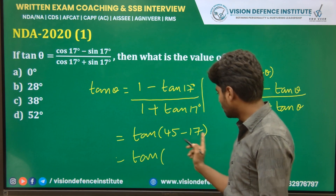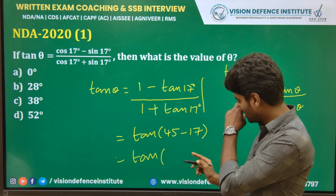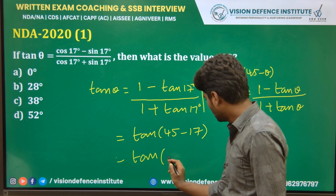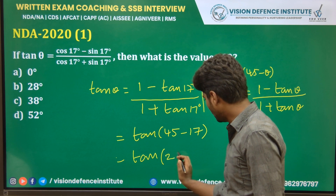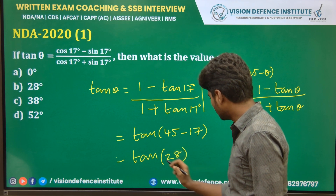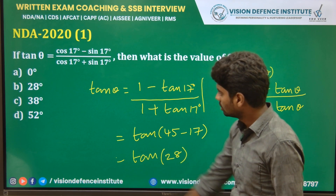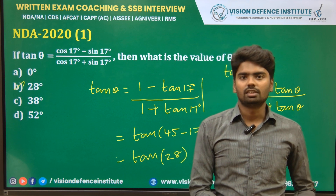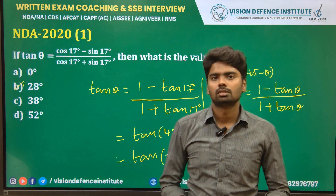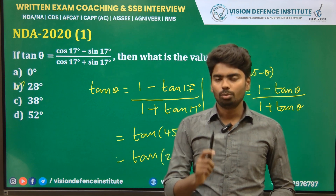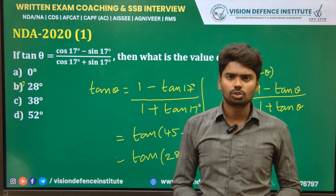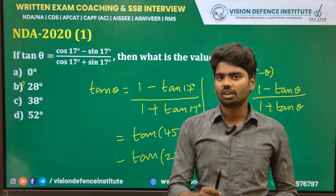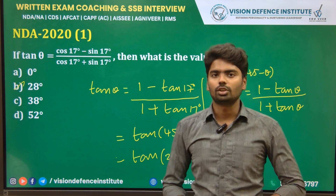45 minus 17 equals 28, so the answer is θ = 28°. I hope you all have understood. For further details, contact us. Thank you.